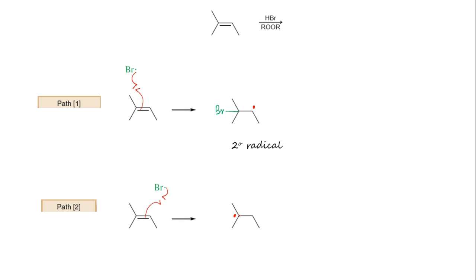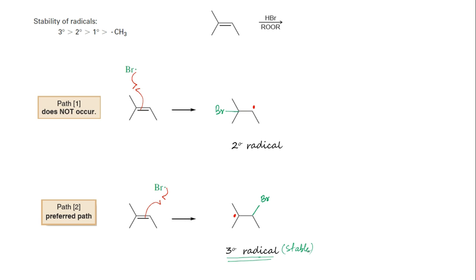We know that a tertiary radical is more stable than a secondary radical. Therefore, the bromine radical will add to the carbon-carbon double bond preferably through Path 2 to form the more stable tertiary radical. This will then abstract a hydrogen radical from HBr to form the secondary alkyl halide as product.